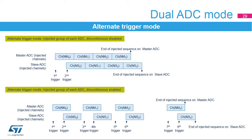The alternate trigger mode converts an injected group of channels and conversions are started only by hardware triggers. The external trigger source comes from the injected group multiplexer of the master ADC. When discontinuous mode is disabled and the first trigger occurs, all injected master ADC channels in the group are converted. When the second trigger occurs, all injected slave ADC channels are converted. When discontinuous mode is enabled, the first trigger converts the first injected channel of the master ADC, and the second trigger converts the first injected channel of the slave ADC.